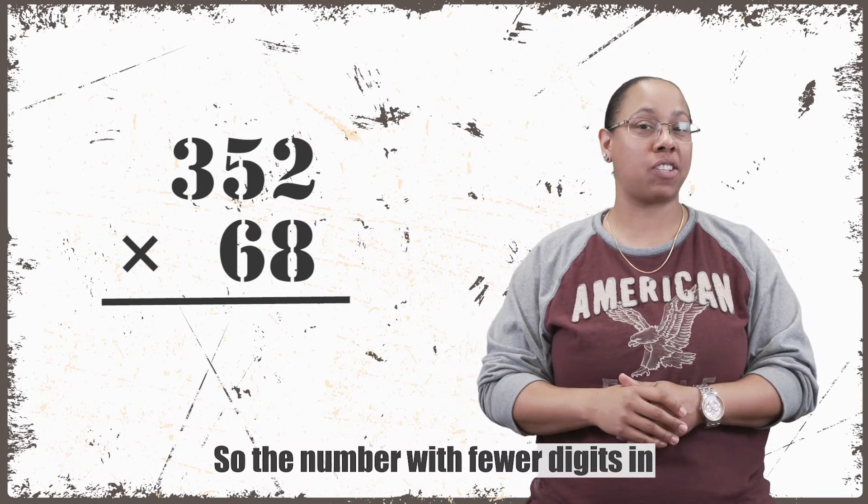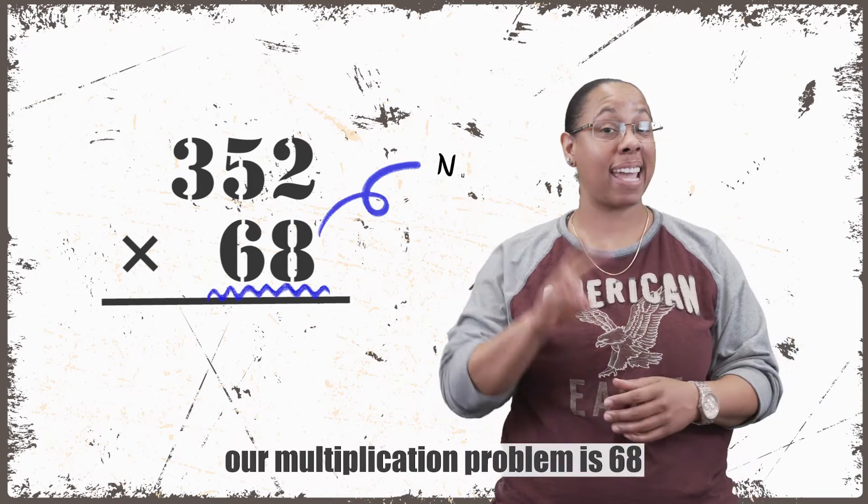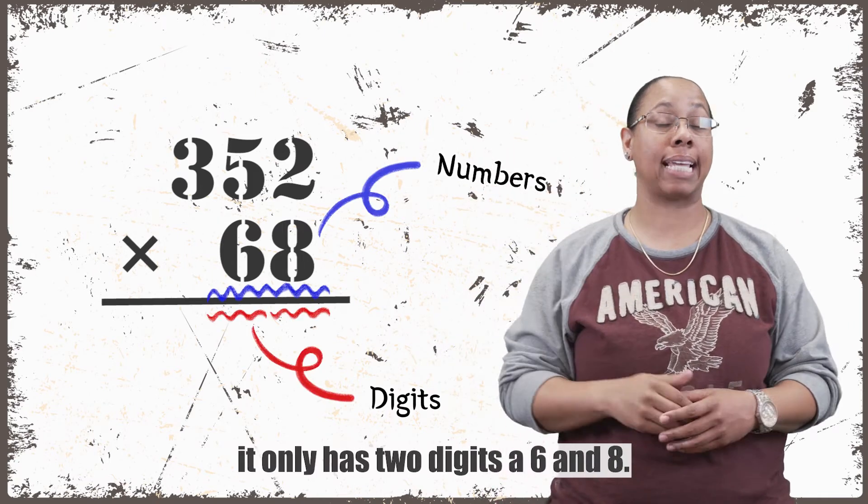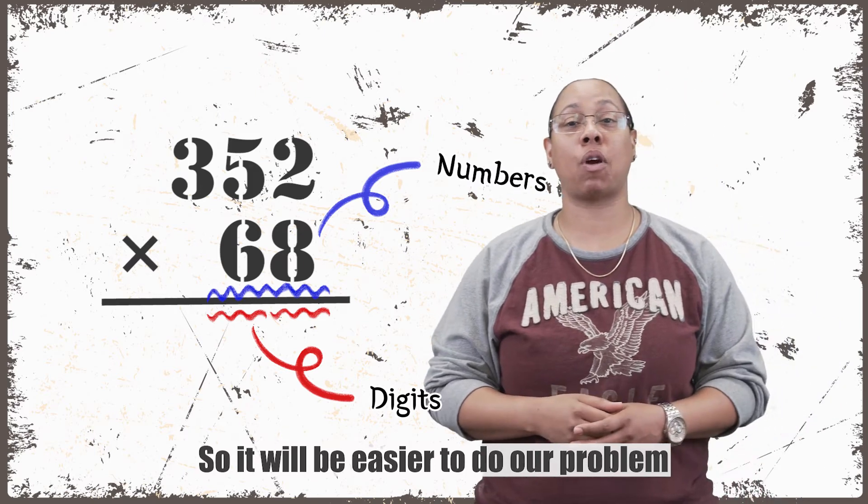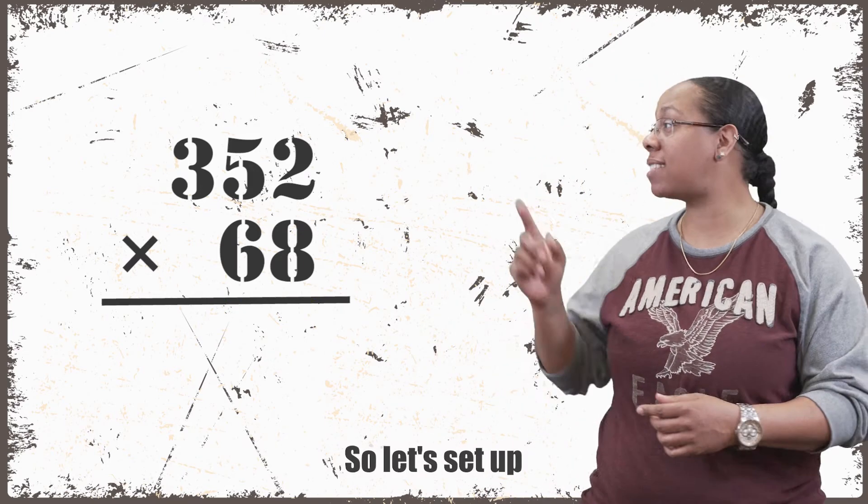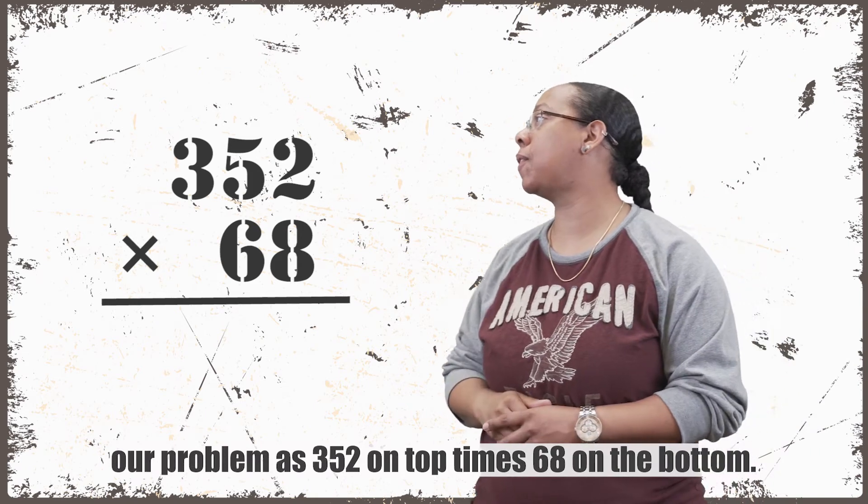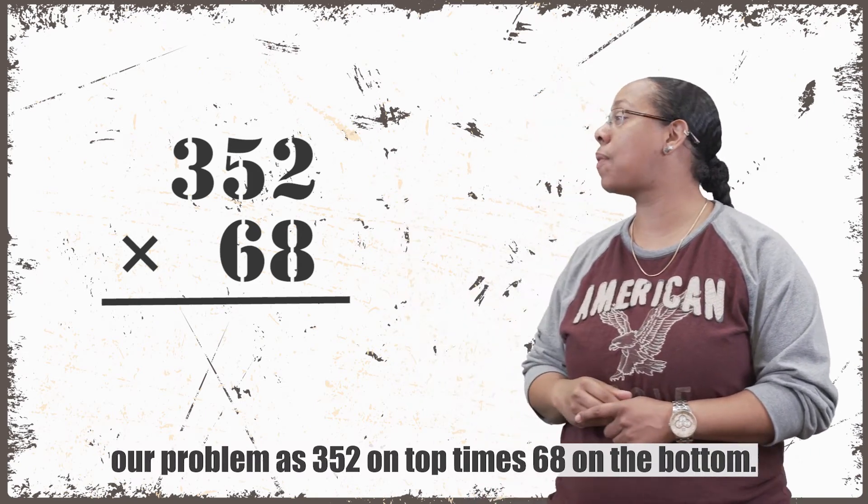So the number with fewer digits in our multiplication problem is 68. It only has two digits, a 6 and an 8. So it will be easier to do our problem with that number on bottom. So let's set up our problem as 352 on top, times 68 on the bottom.